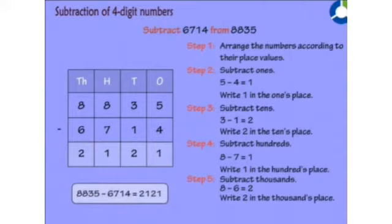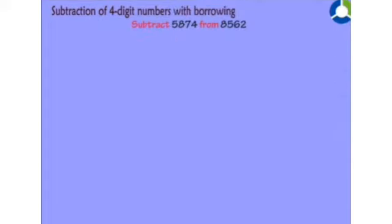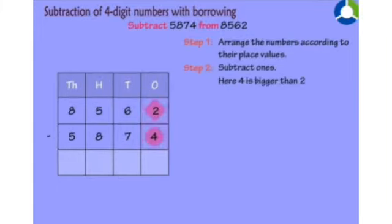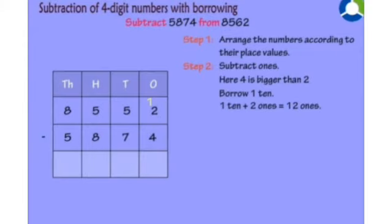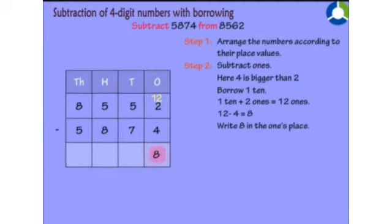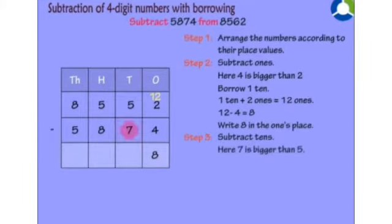Now we will do subtraction of 4-digit numbers with borrowing. Subtract 5874 from 8562. Step 1: Arrange the numbers according to their place values — 1's, 10's, 100's, and 1000's place. Step 2: Subtract 1's. Here 4 is bigger than 2, so you borrow 1 ten. Remember: 1 ten plus 2 ones equals 12 ones. Now 12 minus 4 equals 8. Write 8 in the 1's place.